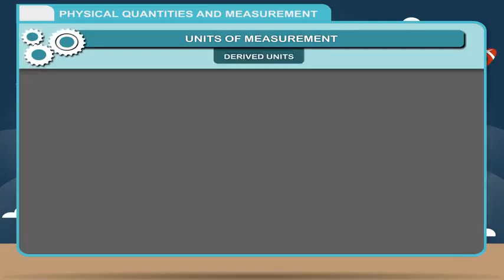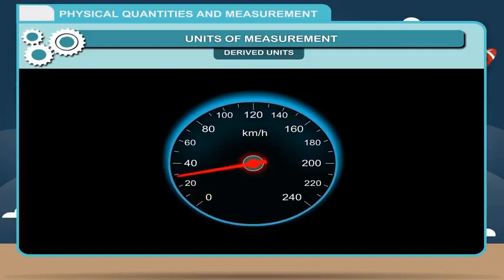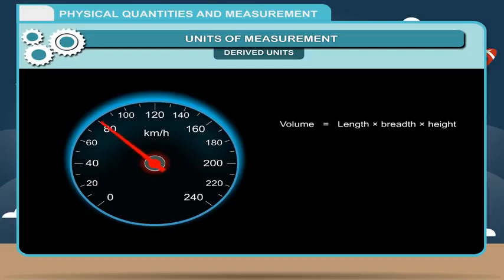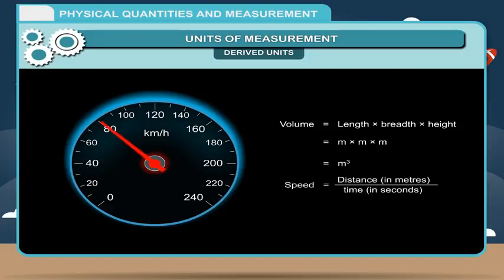Derived Units: The units which are obtained with the help of fundamental units are called derived units. They strictly depend on the fundamental units and are formed by the combination of one or more fundamental units. For example: Volume = Length × Breadth × Height = metre × metre × metre = metre³. Speed = Distance (metres) ÷ Time (seconds) = metre per second.